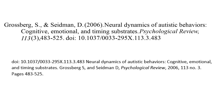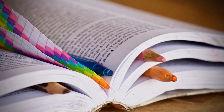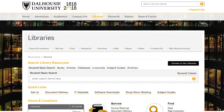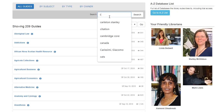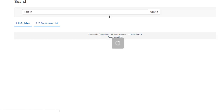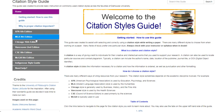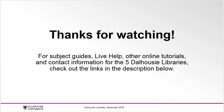Although this tutorial focuses on APA citations for journal articles, APA style is also used to cite books, technical reports, and other types of scholarly information. For more information on all citation styles, see the DAL Libraries citation guide. Start at libraries.dal.ca, click on Subject Guides, and select Citation Style Guides. Thanks for watching. For subject guides, live help, other online tutorials, and contact information for the five Dalhousie libraries, check out the links in the description below.